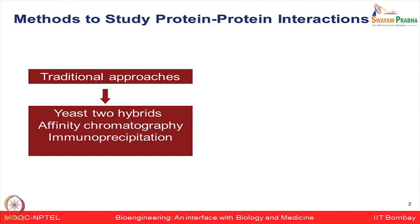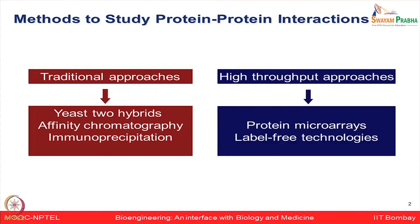Conventionally there have been different methods used to study protein-protein interactions. For example, traditional approaches including yeast two-hybrid, affinity chromatography, and immunoprecipitation methods were used. More recently there are high-throughput methods like protein microarrays, surface plasmon resonance, and other label-free technologies which have been used for studying biomolecular interactions.